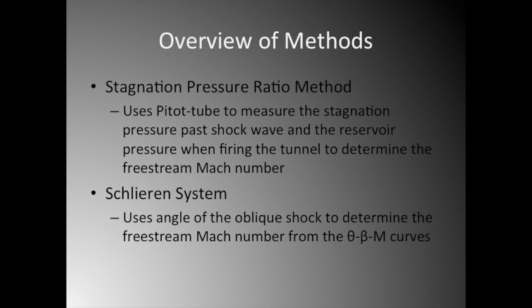The first method used was the pressure ratio method. The pressure ratio method uses the isentropic relation of the stagnation pressure past the shock wave and the stagnation pressure ahead of the shock wave to determine the free stream Mach number. The second method we used was the Schlieren method, which uses the relationship between the angle of the oblique shock on the object to the free stream Mach number of the flow.